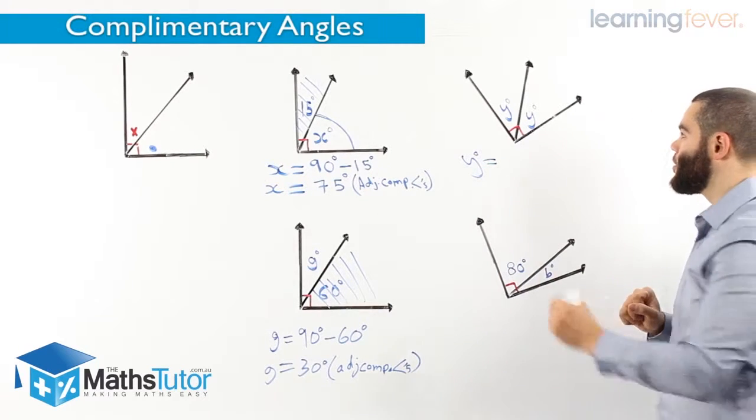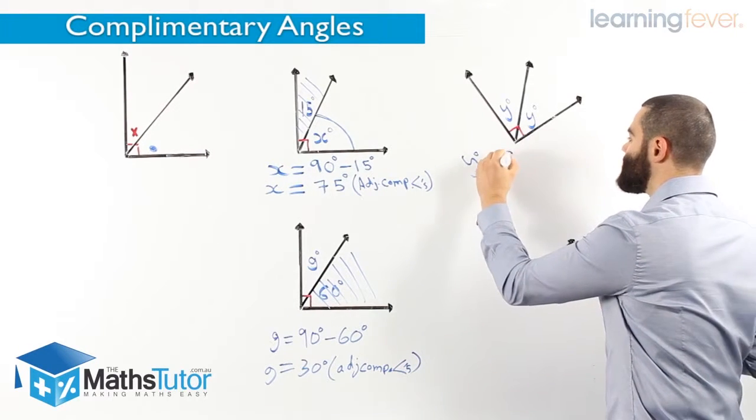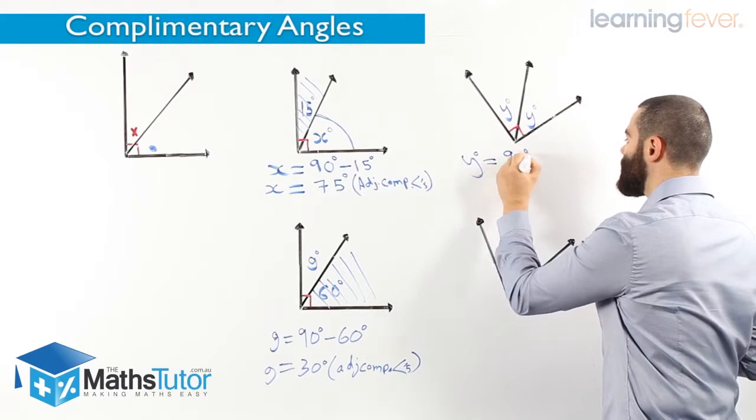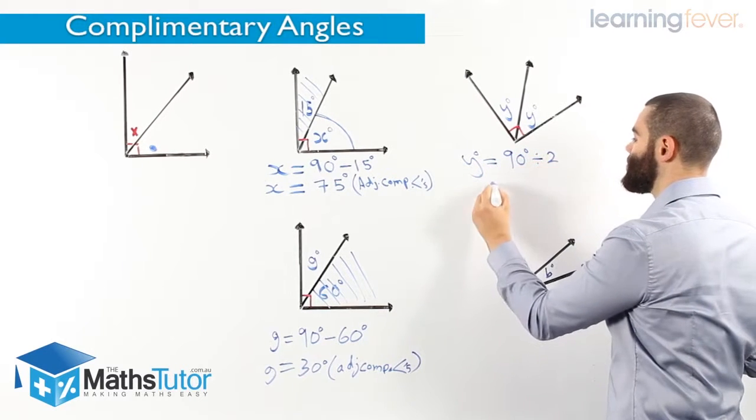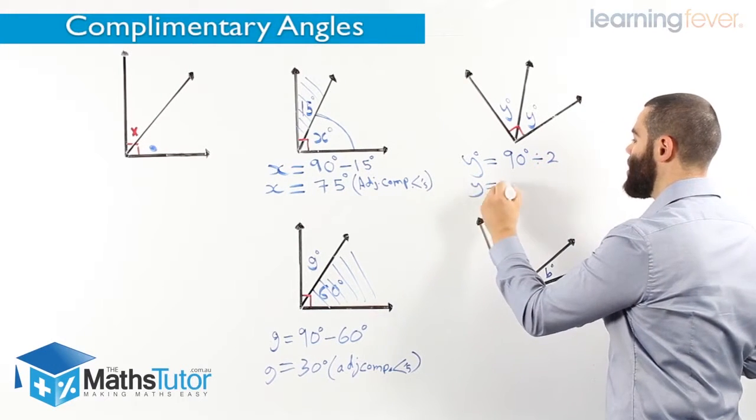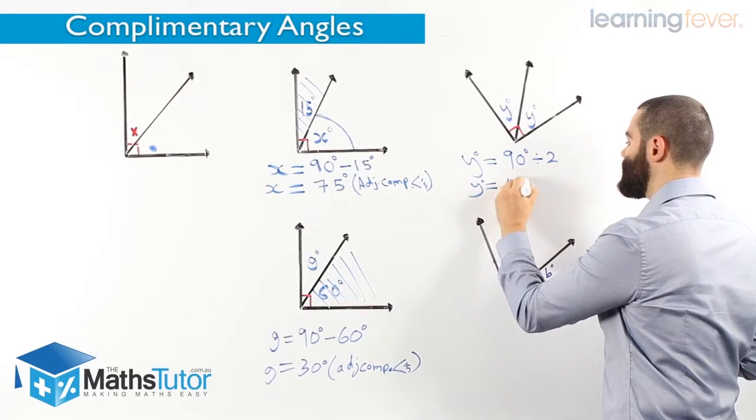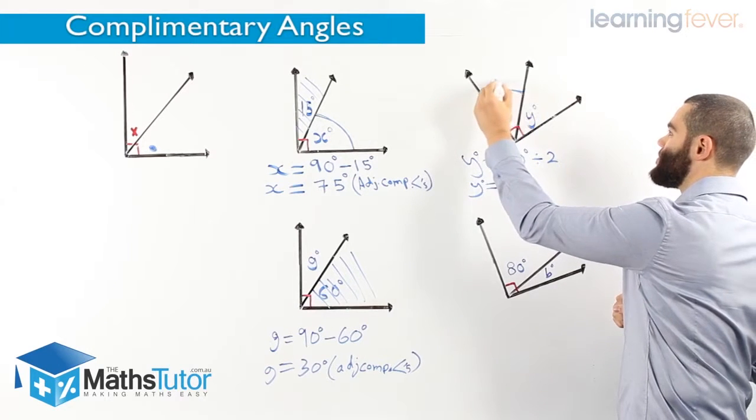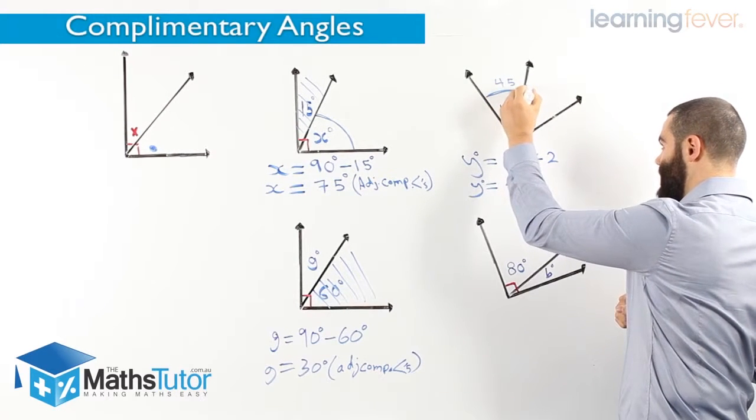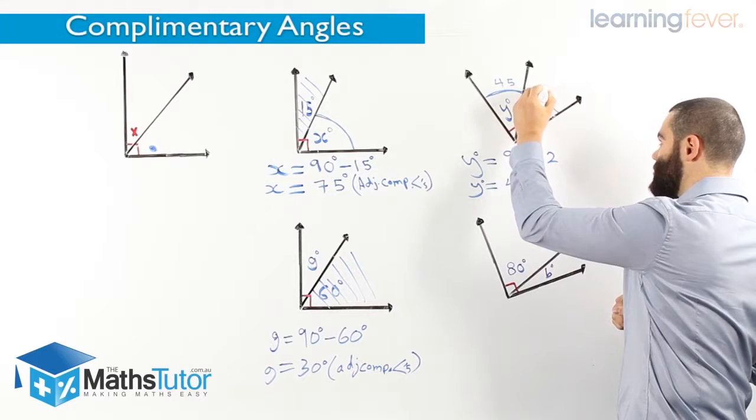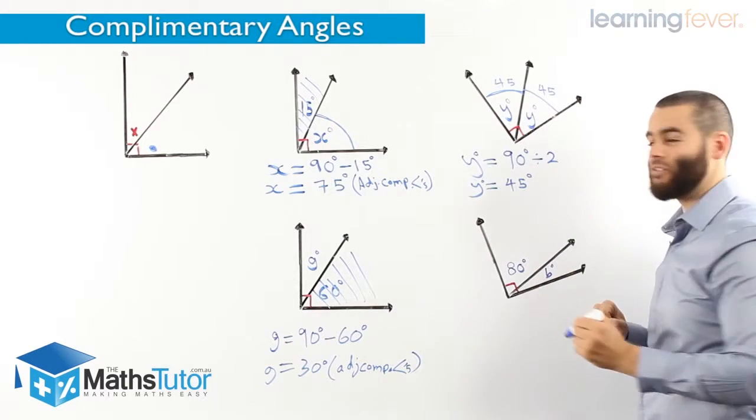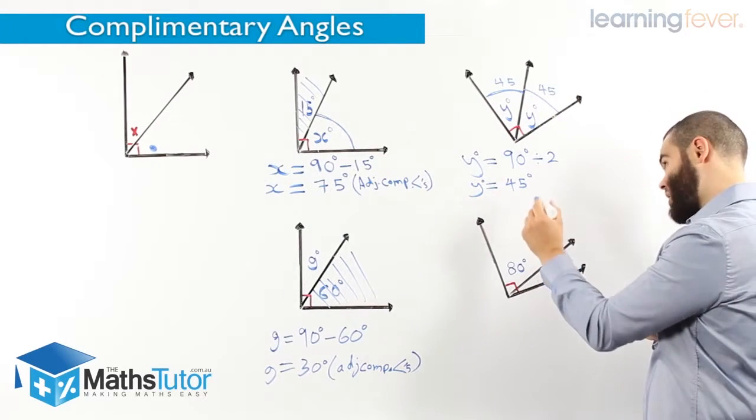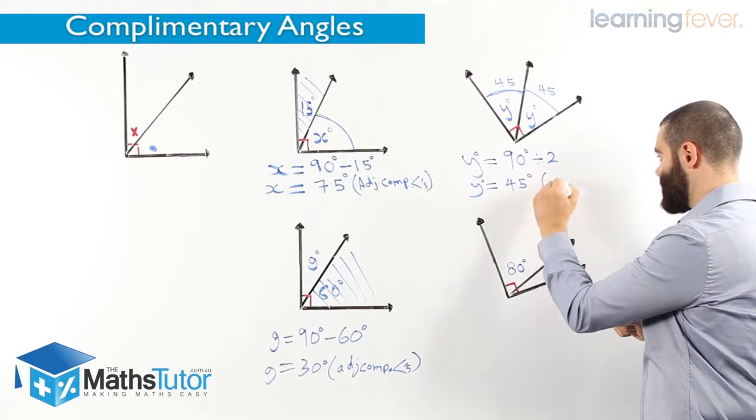Very easy. We know that this is 90 degrees. It's been split into two, so we are dividing by two. So y must be 45 degrees. So this section here is 45, and this section here is also 45. 90 divided by 2, y is 45 degrees, and again, we have to give our reason: adjacent complementary angles.